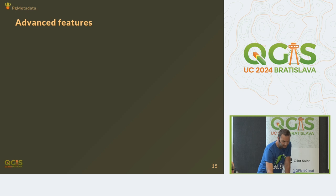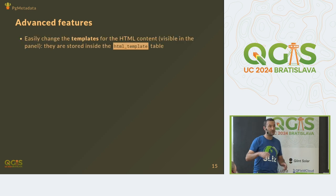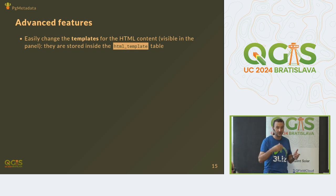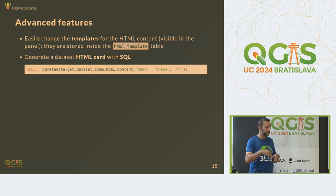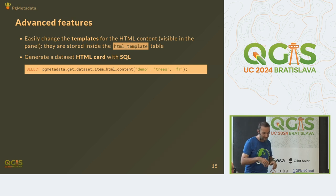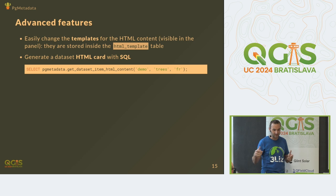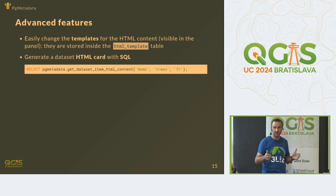Some advanced features: it's possible to change the HTML templates. You saw it was blue — you can customize it, add new fields, or change the HTML template to customize the layout of the rendering. Everything is done in SQL. Actually, the plugin is about 30% Python — most of the code is SQL: SQL functions, SQL triggers. We have a simple function like `SELECT pgmetadata.get_dataset_item_html_content()` — you provide the schema name, the table name, and the language for the HTML output. Then you're free to use your own client, make this simple SQL query, and it will generate all the HTML for this dataset in the language you requested.